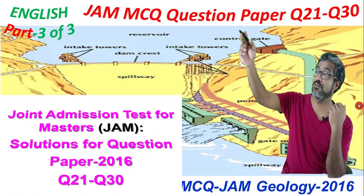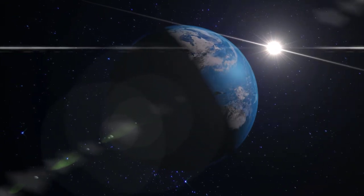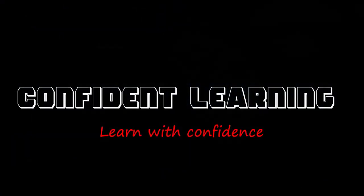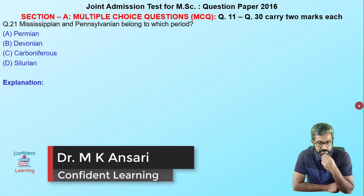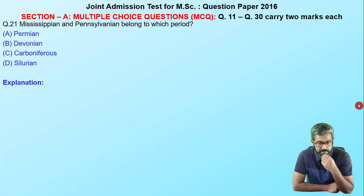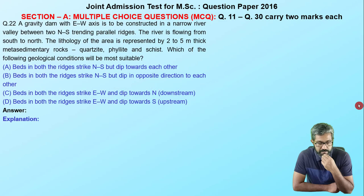This is the first question — a very basic question related to the geological time scale. Mississippian and Pennsylvanian belong to which period? It is very simple: it is Carboniferous. If you don't know about the geological time scale, I have already uploaded a video where you can go and check how to remember it with exact timing.